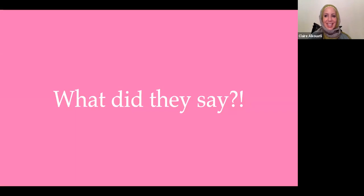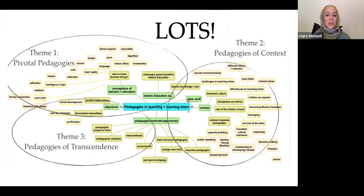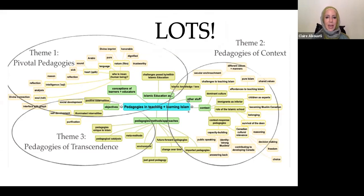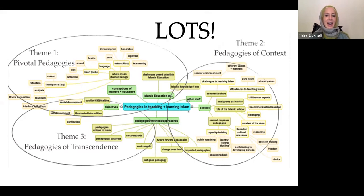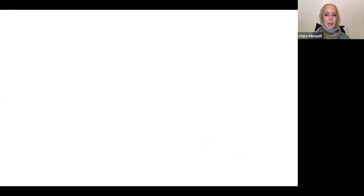So what did the educators say? They said lots. What I want to show you is my process of how I discerned three themes. Of the 20 hours of talk turned into text, I read it very closely and started to discern big ideas, writing them down. I found that they would cluster into different thematic areas — some involving context, others straight-up methodologies, others speaking about the learner or educator, and others about what Islamic education really is. From all of these codes, I came up with three particular themes.